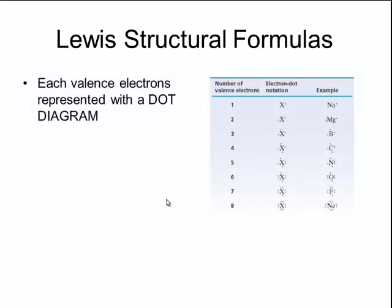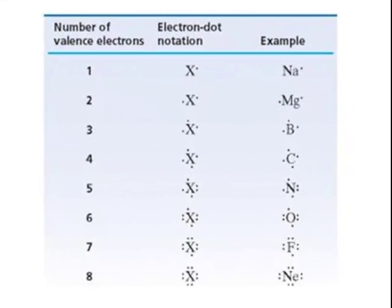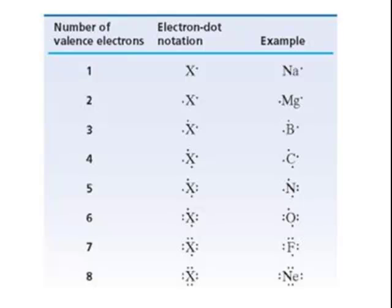We can represent different kinds of molecular compounds using a format called a Lewis structural formula. When drawing Lewis structural formulas, each atom in the molecule is represented with a dot diagram, where the dots around the outside of the atom symbol represent the number of valence electrons. All of the elements in group one, the alkali metals, have one valence electron, so they would have one dot on the outside of their element symbol, whereas all of the elements in the halogen group, group 17, have seven valence electrons, so they will have seven dots surrounding their element symbol.